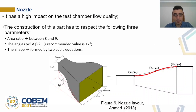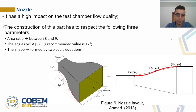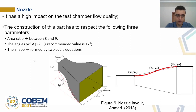The nozzle has a high impact on the test chamber flow quality. The constructor of this part has to respect three parameters: area ratio between eight and nine, the angles alpha and beta divided by two, with a recommended value of 12 degrees. The shape is formed by two cubic equations. The area ratio is calculated using the area of the inlet divided by the area of the outlet.